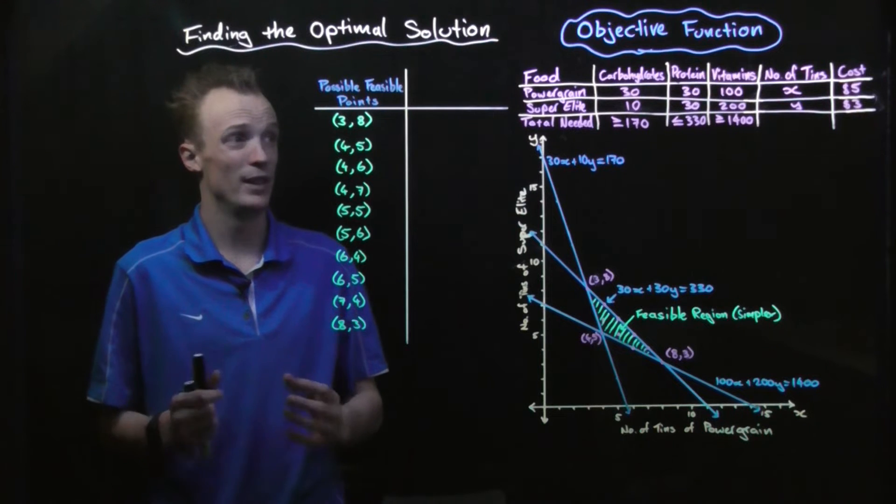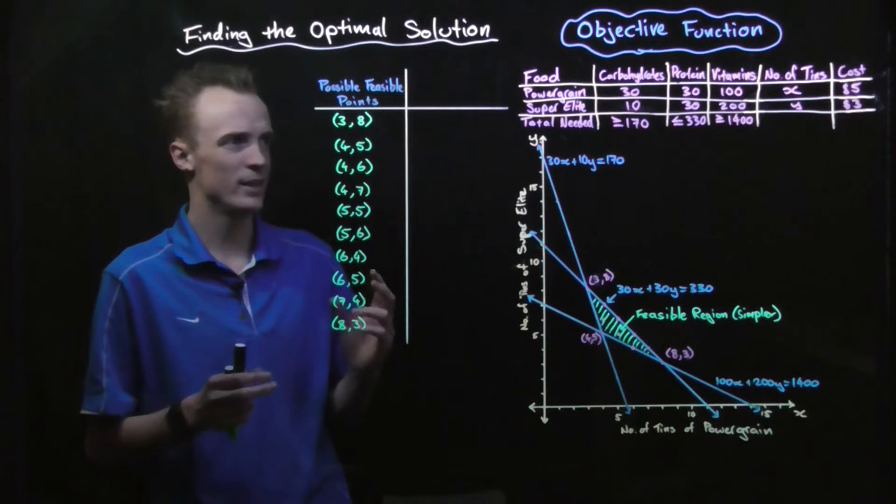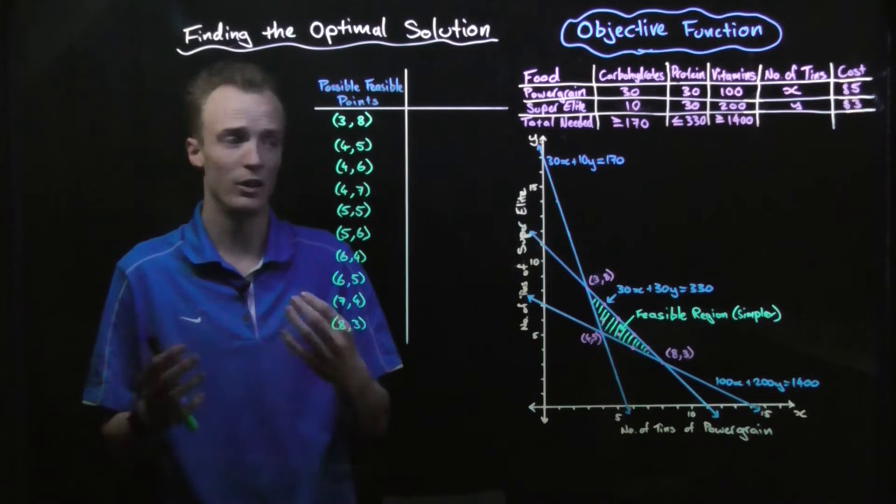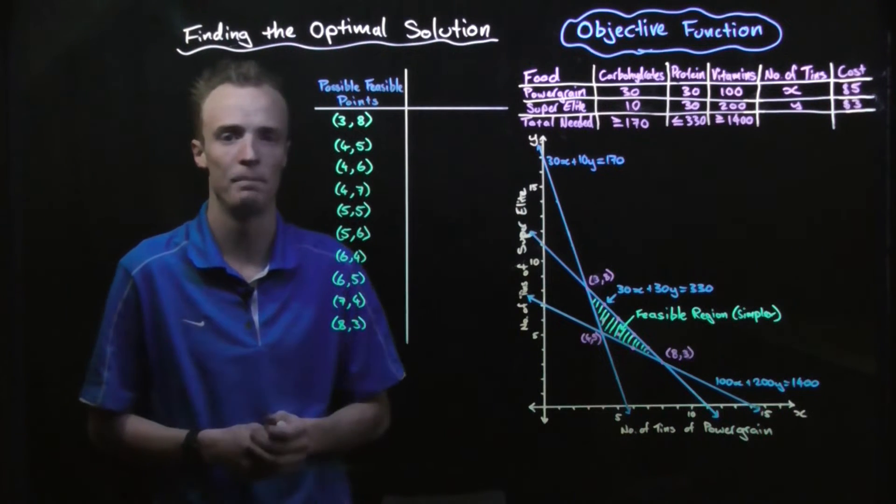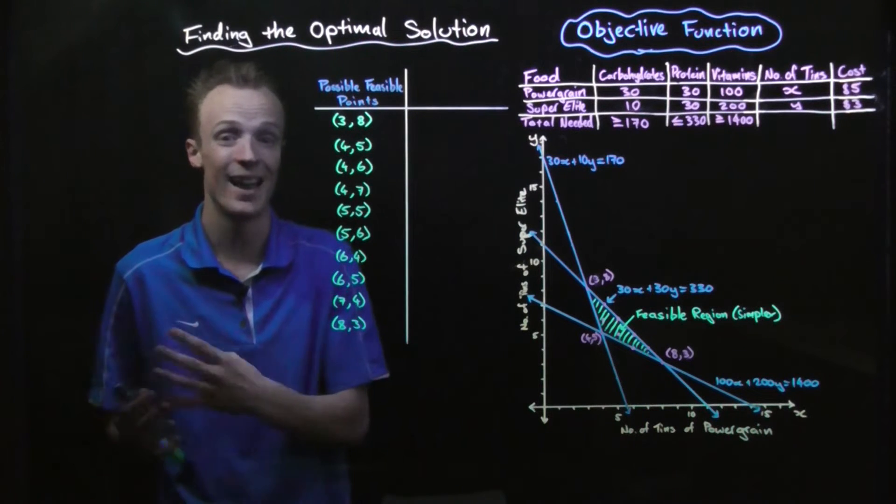This is absolutely vital. So what is the objective function? If we break it down to the two words: objective means a goal. So what is our goal? In this case our goal is to minimise the cost for our athlete. Function means how do you work out that cost?